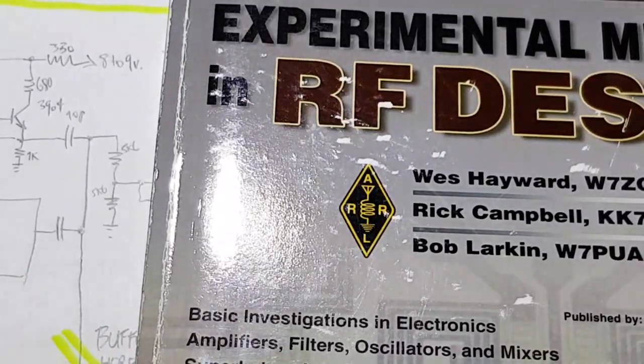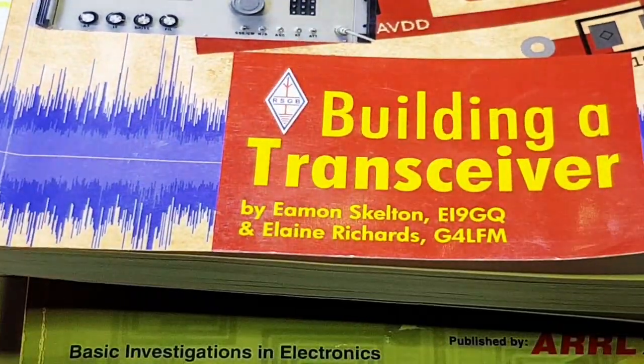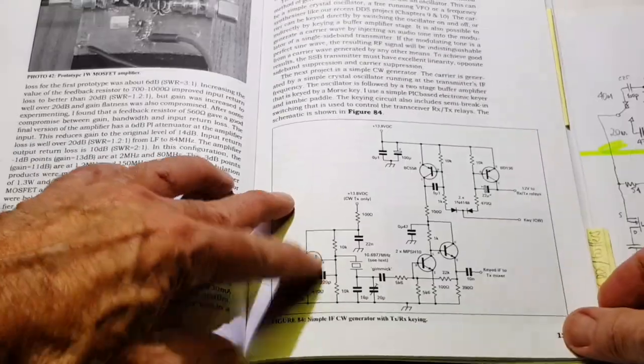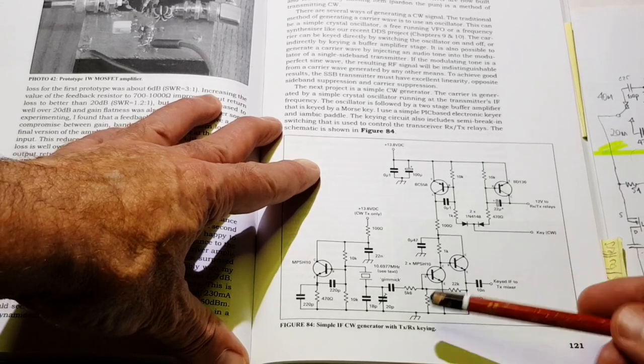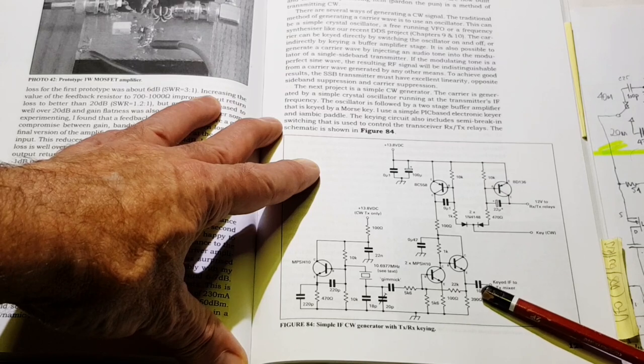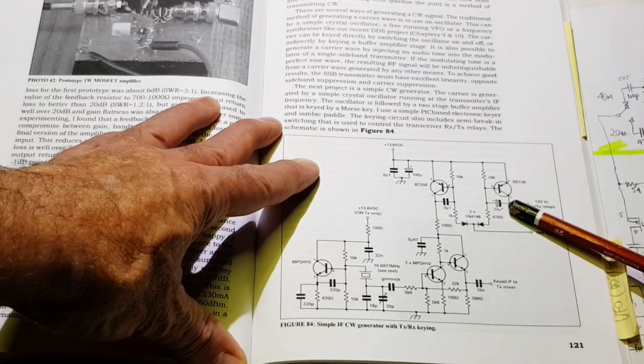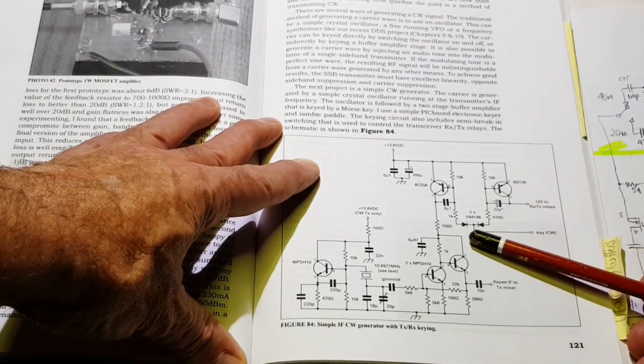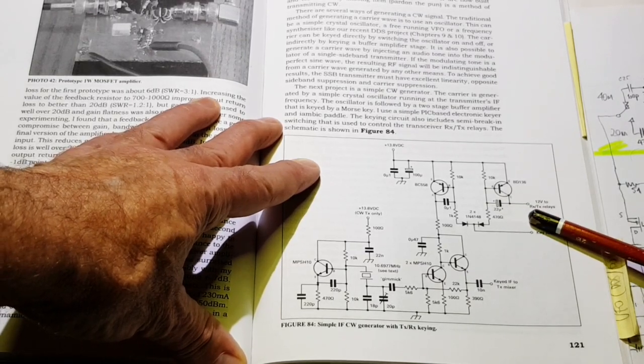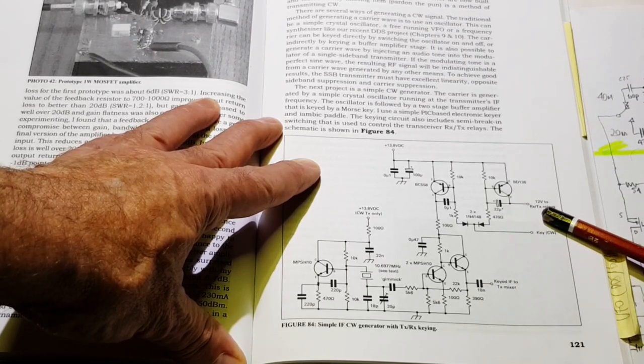Lots of ideas here and here. This circuit looks useful. It's a crystal oscillator and a buffer which is keyed. There's the key there. But it also has a second DC switch activated by the key line which has a longer dropout delay. So that can be used to apply 12 volts power to the transmitter. For instance, the receive transmit relays.